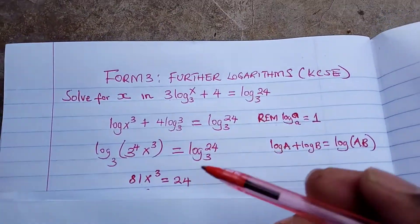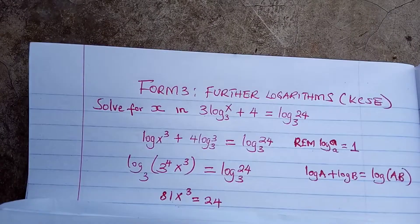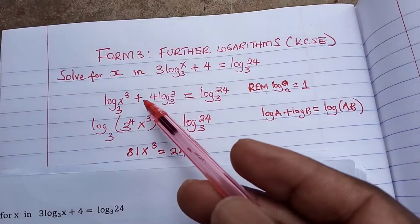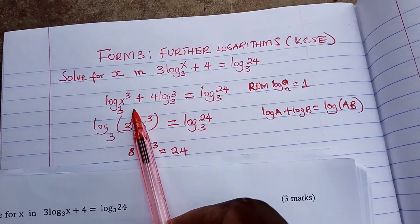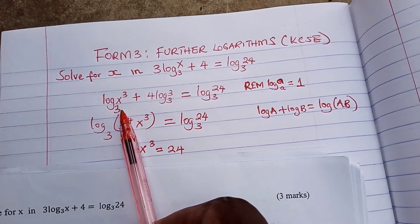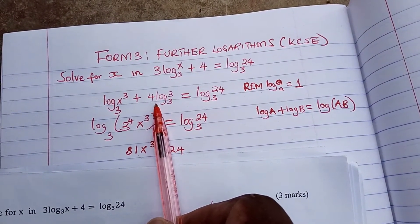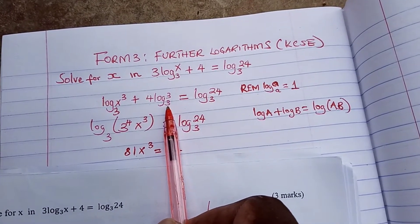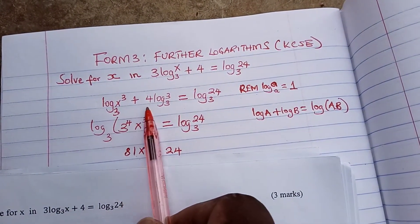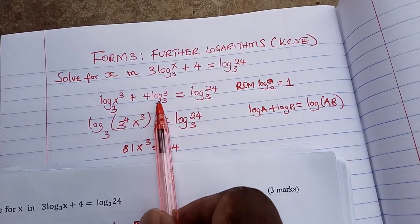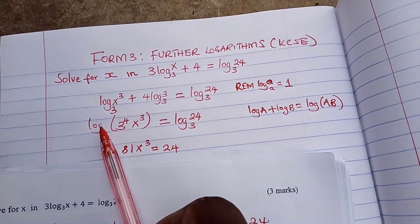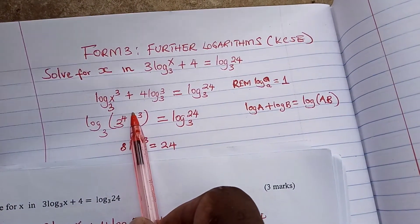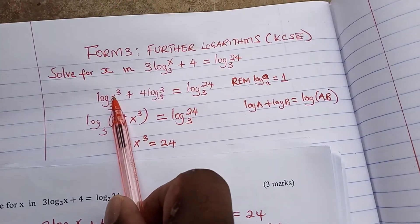And so that is to base 3. And now at this point you can see we have 4 log 3 to base 3. So it means because there is addition here, we will multiply this log. So we will take log 3 to power 4, because this is 4 log 3, so it is 3 to power 4 times this x to power 3.